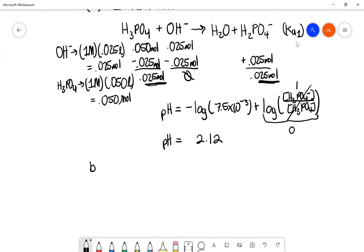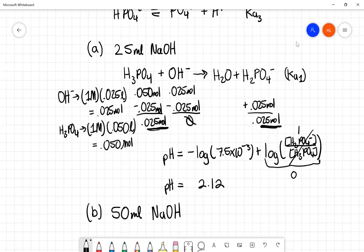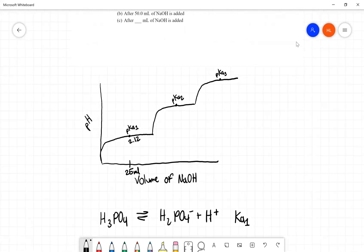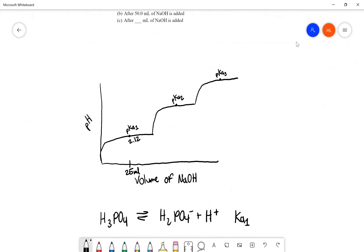So moving on, if we do part B, that was 50 milliliters, I believe, of NaOH. So in this case, we have to think about what does this mean on our graph? So we know that at pKa of 1, that occurs at 25 milliliters. So we know now that the dominant species that is apparent in this solution at 50 milliliters would have to be no longer H3PO4.